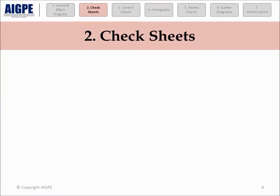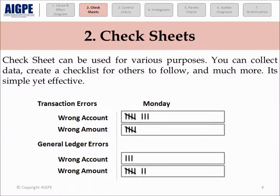Check sheets are one of the most simple tools that help standardize activities. They can be used in any process and can be easily customized. Check sheets are used for real-time data collection, with marks divided into separate groups. They are mostly used to identify defects in a process, standardize activities, and serve as a reminder tool for effective planning.